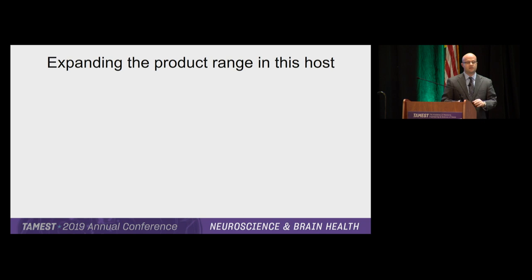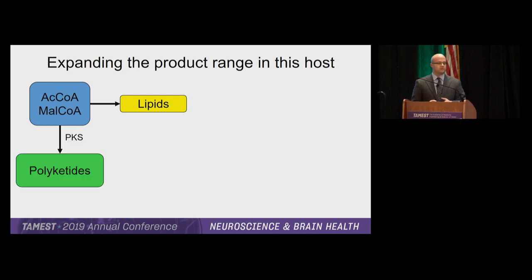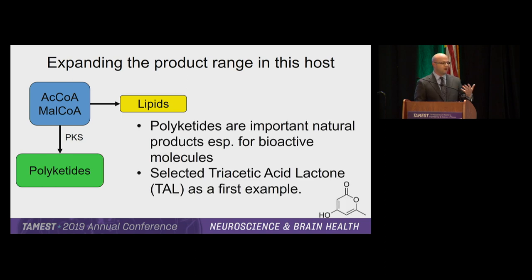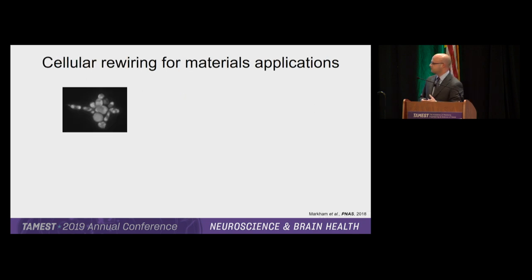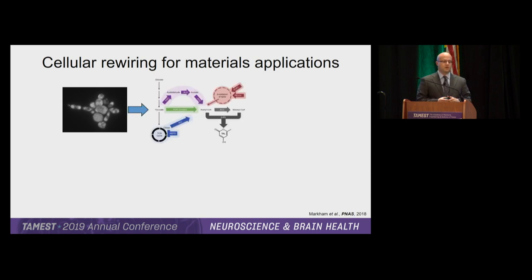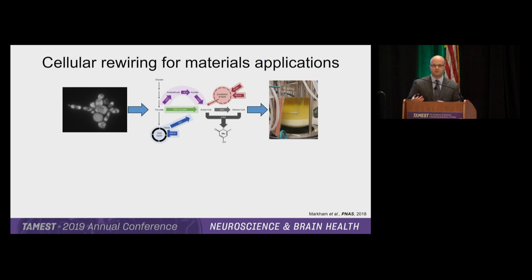We can also take that same acetyl-CoA and malonyl-CoA precursor pool and convert it into other products — specifically polyketides, which are interesting for pharmaceutical agents. Our target molecule was triacetic acid lactone (TAL), a simple polyketide with interesting chemistry. After about two years of pathway engineering on Yarrowia lipolytica, we became a hyper-overproducer of TAL — so much that it precipitated as a snow globe in our bioreactors, reaching about 36 grams per liter with almost 40% conversion yield from sugars.